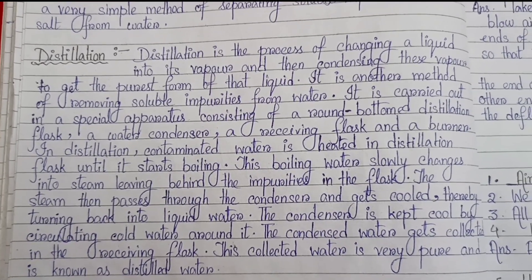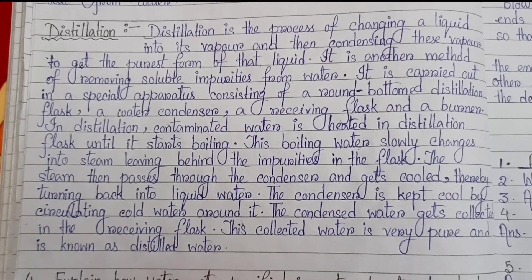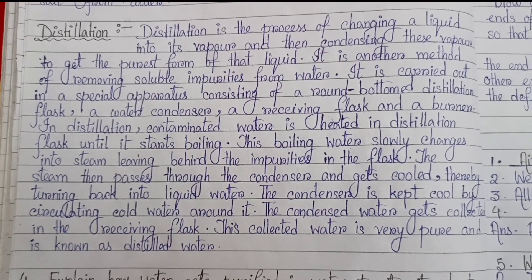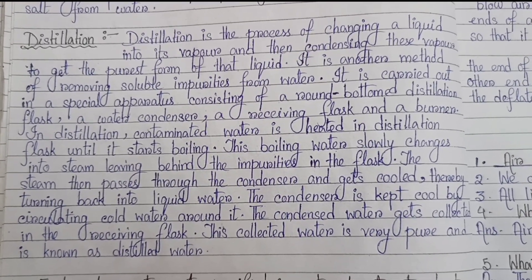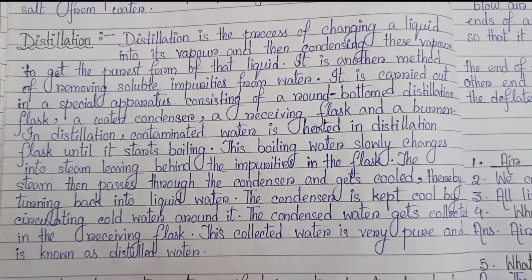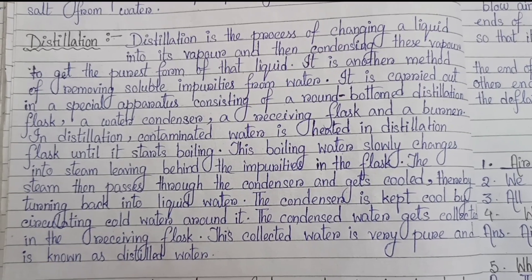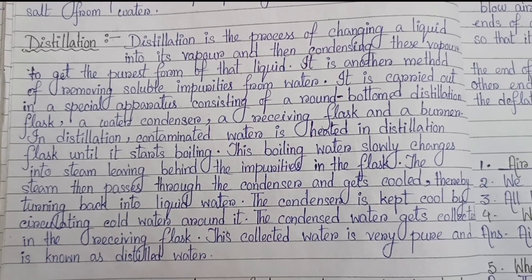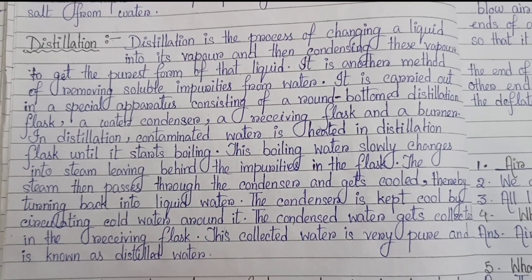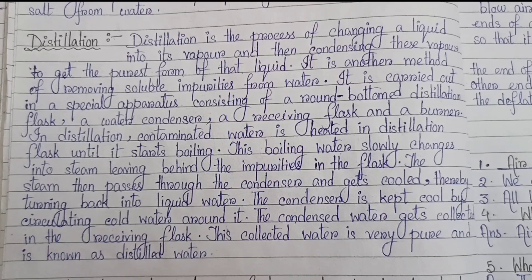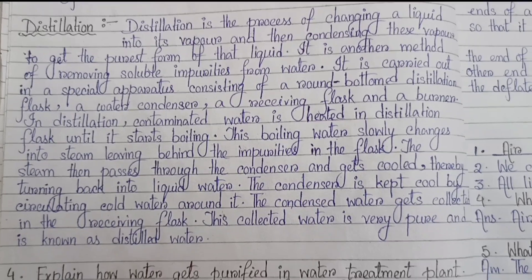Distillation is another method of removing soluble impurities from water. It is carried out in a special apparatus consisting of a round-bottom distillation flask, a water condenser, a receiving flask, and a burner. In distillation, contaminated water is heated in the distillation flask until it starts boiling. The boiling water slowly changes into steam, leaving behind the impurities in the flask. The steam then passes through the condenser and gets cooled, turning back into liquid water. The condenser is kept cool by circulating cold water around it. The condensed water collected in the receiving flask is very pure and is known as distilled water.